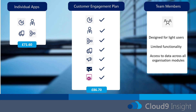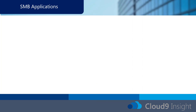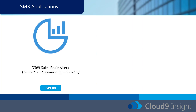There is also the team member functionality, which has been increasingly popular. Team members are designed for light users — they have heavily limited functionality, but they do give you access to data across all the modules that the organization uses. There are also some SMB-focused applications: the first is Dynamics 365 Sales Professional, which is reasonably similar to the enterprise-level solution in functionality, but the configurations that you or a preferred partner can undertake are limited — you're limited to the amount of custom entities, custom workflows, etc. Cloud9 can help you understand which would be the best license for you.